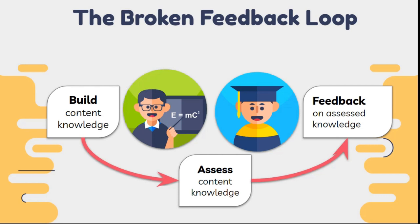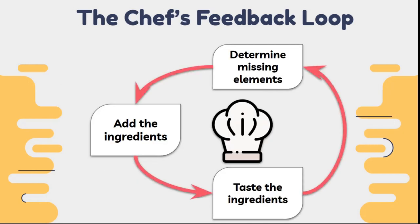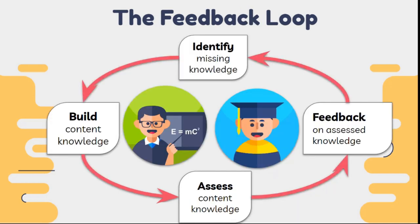What we want is a chef's feedback loop — always adding ingredients, tasting, then determining what's missing, maybe a little salt, maybe a little pepper — a full circle. The feedback loop we want: build knowledge, assess content knowledge, get feedback through marks or comments, identify the missing knowledge, build upon that, see what went right and wrong. At the end we have a full circle where we become better educators and help learners gauge where they're understanding work or not.